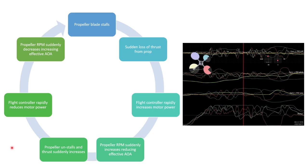When a propeller blade stalls on our mini quads it creates a feedback loop. It starts with the propeller blade stalling, giving a sudden loss of thrust. The flight controller then rapidly increases motor power, and the propeller RPM suddenly increases, which reduces the effective angle of attack, causing the propeller to un-stall and thrust to suddenly increase. The flight controller then rapidly reduces motor power, RPM drops, the effective angle of attack increases again, and we're back to square one with the propeller blade stalling again.